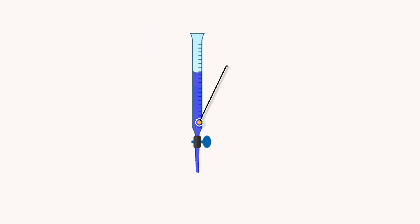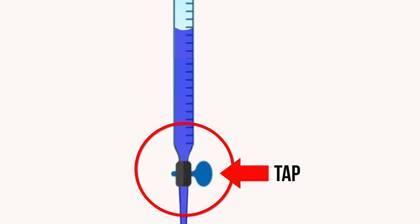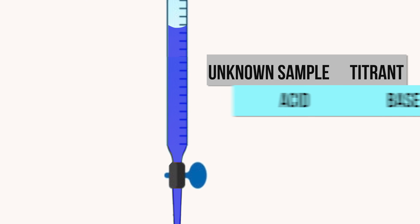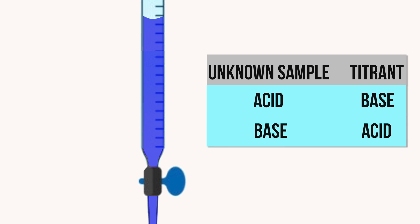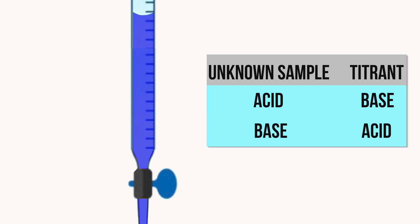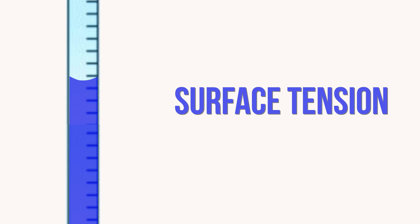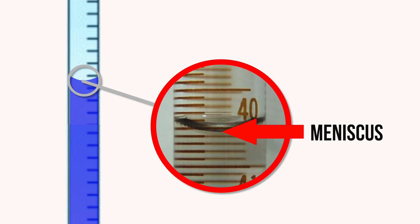In acid-base titration, a titrant of known concentration is poured into equipment called a burette. A burette is a long glass tube with a tap at the end, which can be used to carefully add drops of liquid to a test solution. Once the titrant is settled in the burette, it forms a curved surface of the liquid caused by surface tension. The bottom of this curve is known as the meniscus, and that's what we use to take the measurements.